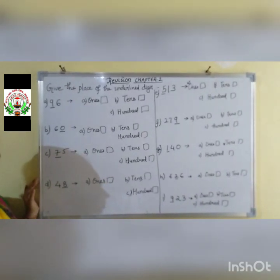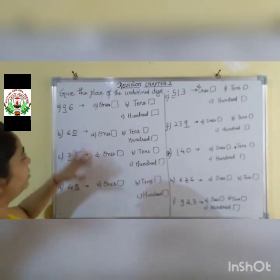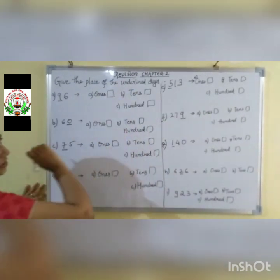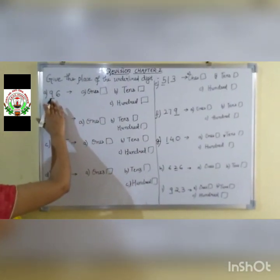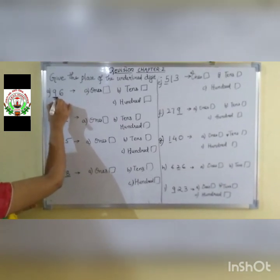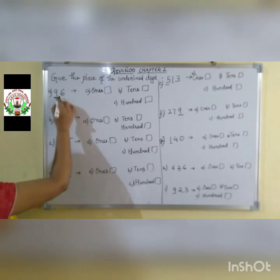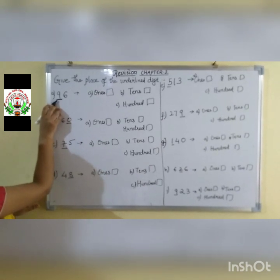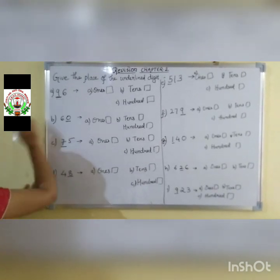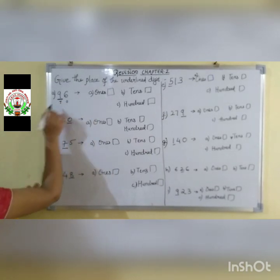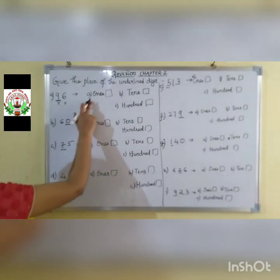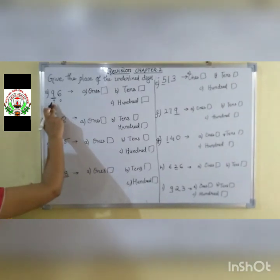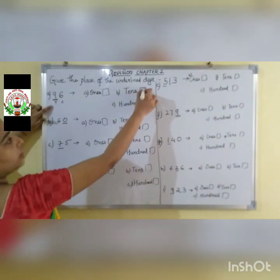Remember the concept of place value, children. Let us do some questions on place value. Give the place of the underlined digits — you have to find which place the underlined digit belongs to. First question A: the number is 96, and the underlined digit is 9. Starting from the right: 6 is in the 1s place, 9 is in the 10s place. So the answer is 10s — tick mark the 10s option.